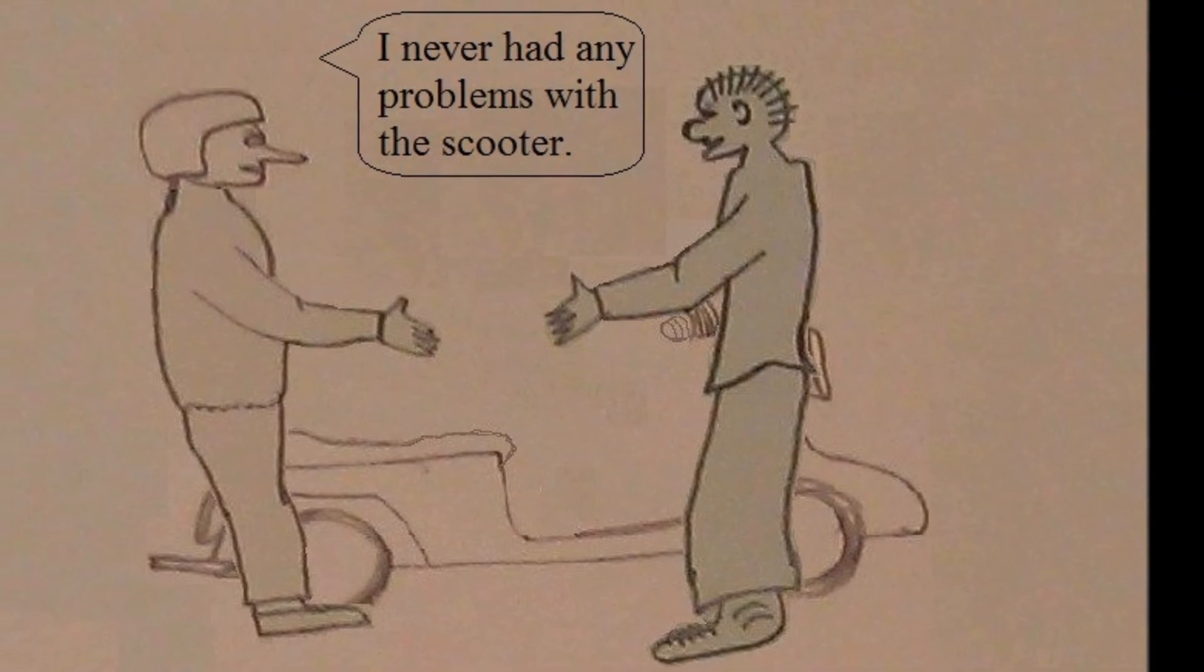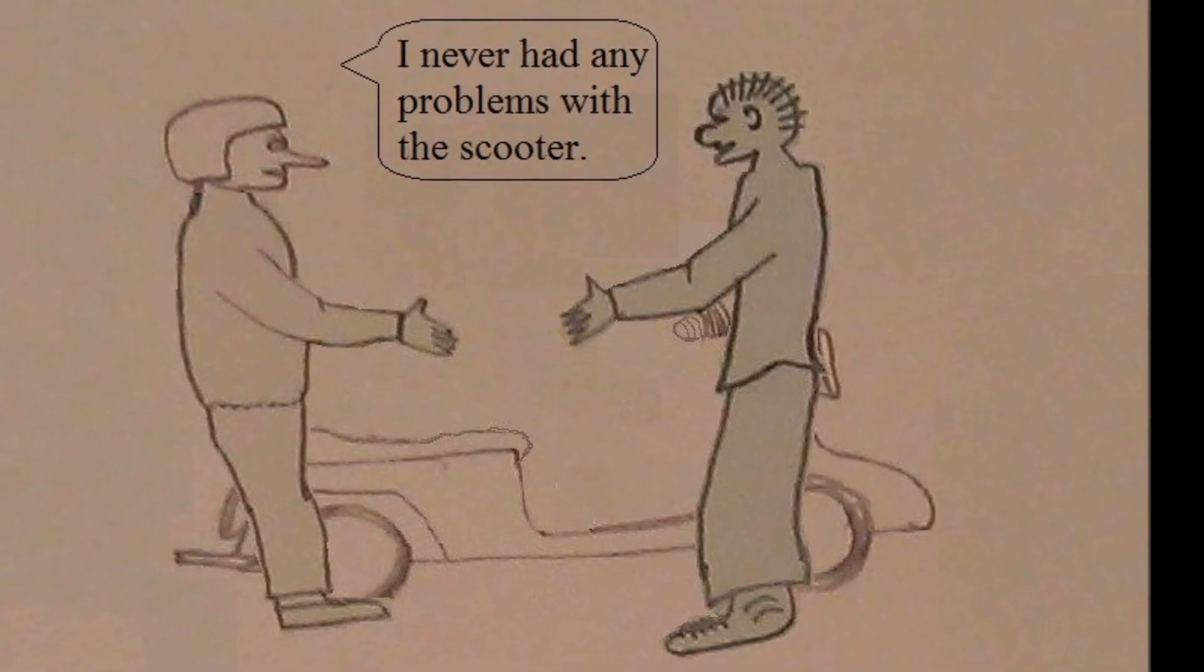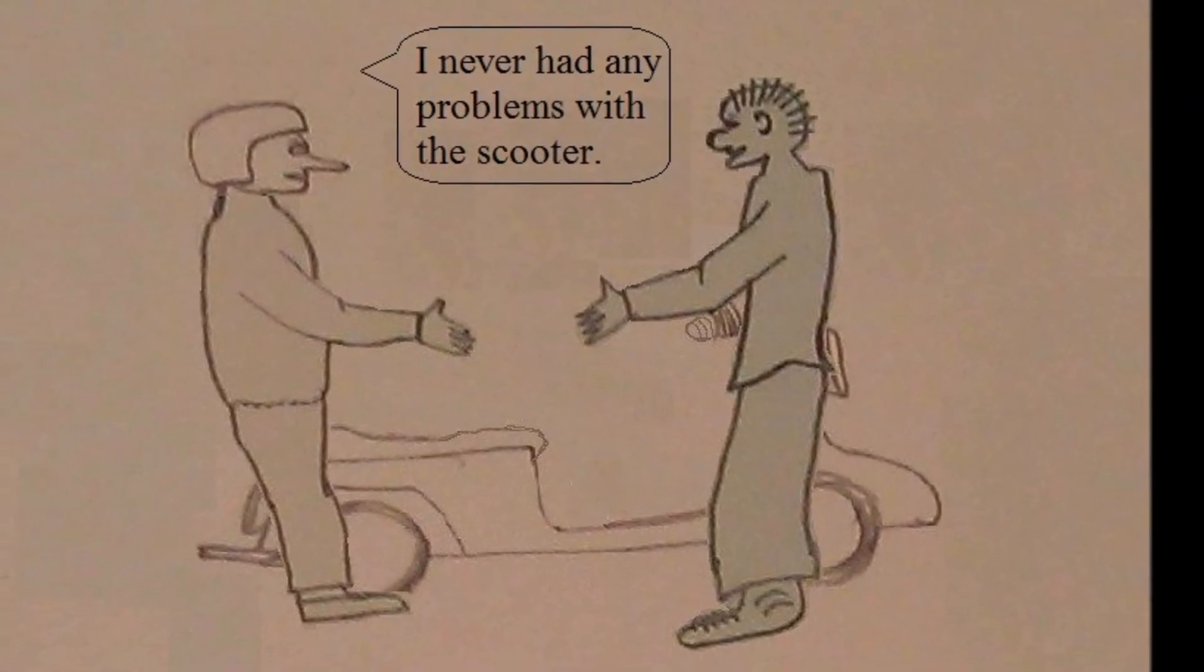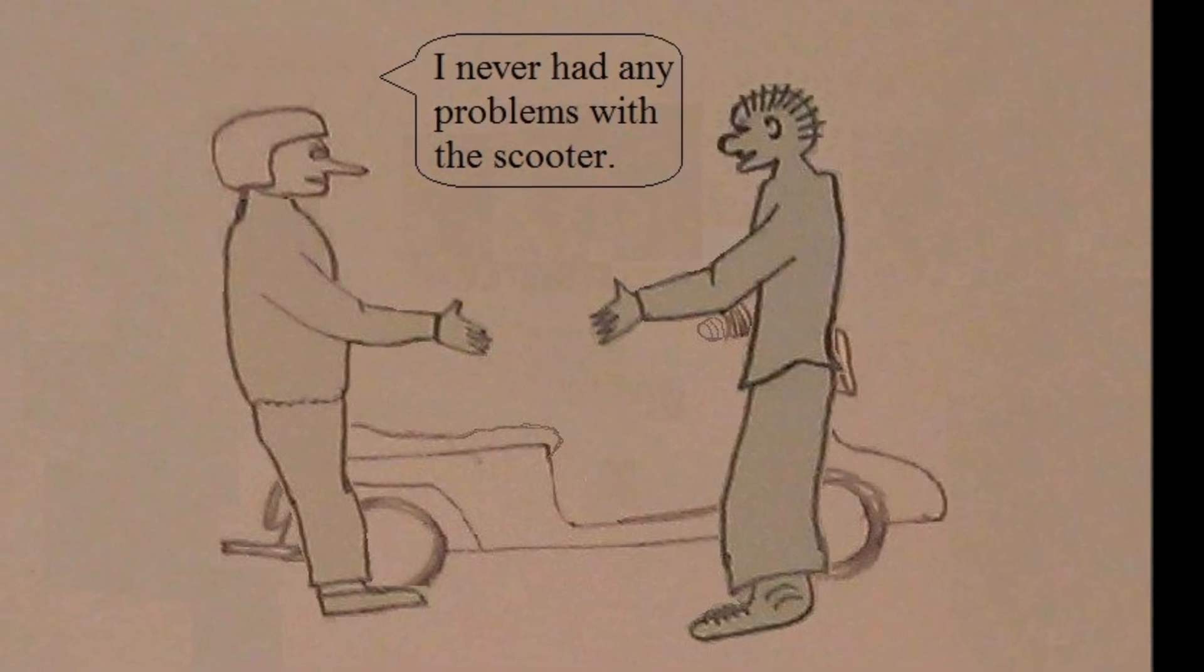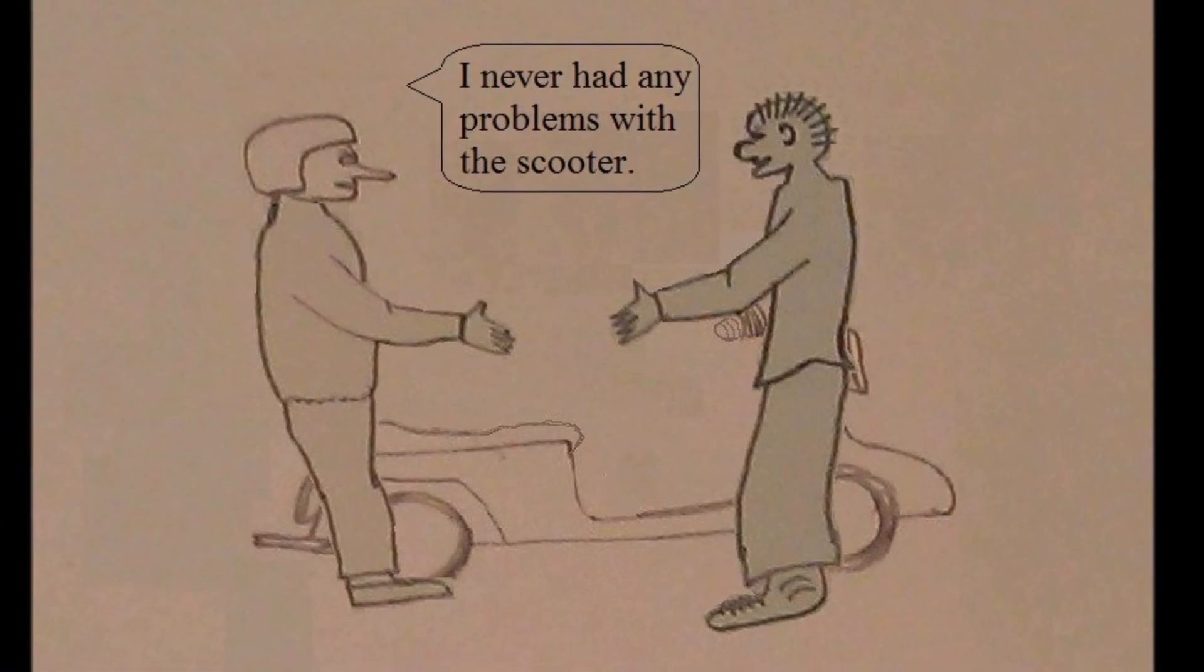Asymmetric information is when one party of an agreement, such as the buyer of a used scooter, doesn't know as much about the subject of the deal as another party, such as the seller.